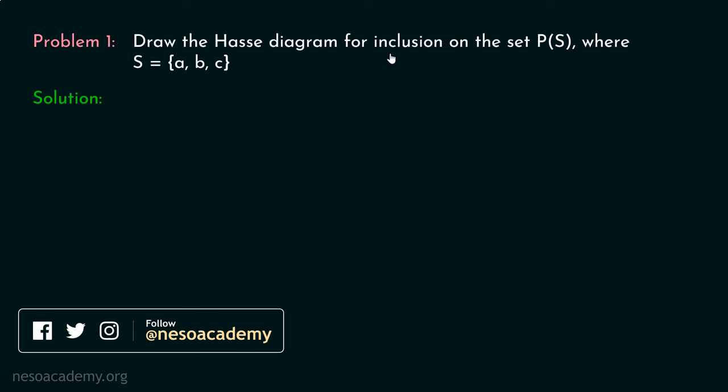What do we mean by inclusion? Inclusion means subset. So there must be some imaginary relation R which consists of ordered pairs (A, B) such that A is a subset of B. And this relation must be defined on the power set of set S.